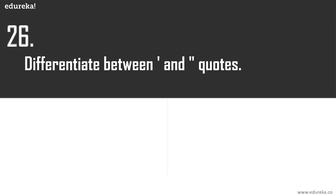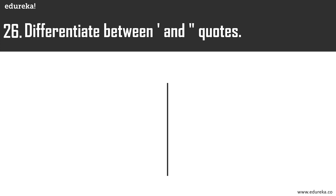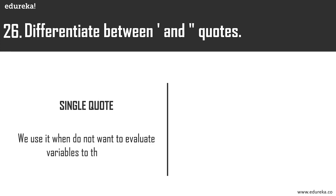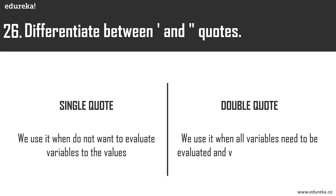Next: the differentiation between single and double quotes. Single quotes are used when you do not want to evaluate variables into values — an echo with a variable in single quotes will print the variable name as-is. Double quotes are used when variables inside the quotes need to be evaluated — the variable is replaced with the value stored in it.